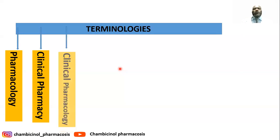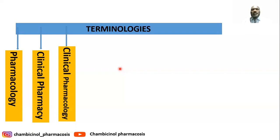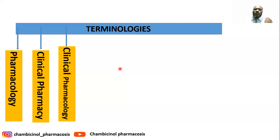We also have clinical pharmacology. Clinical pharmacology is the study of drugs in humans, to evaluate the pharmacokinetics, pharmacodynamic effects, and the safety and efficacy of the drug. When the drug is studied in animals, this is considered as preclinical pharmacology.